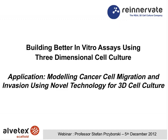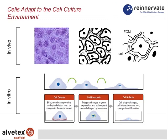The first slide talks about how cells adapt to their environment. In vivo, in tissues in the body, cells reside in three dimensions in close association with neighboring cells and the extracellular matrix, as shown schematically in this diagram.